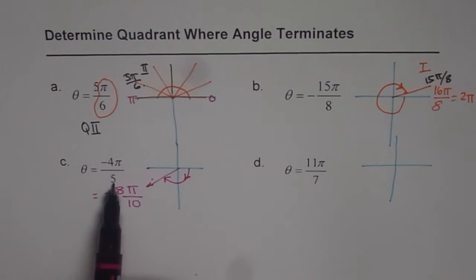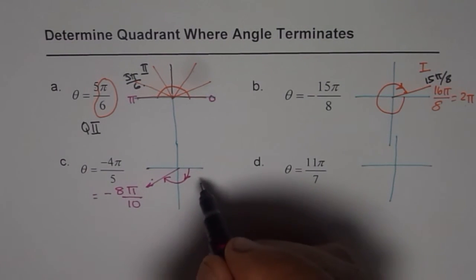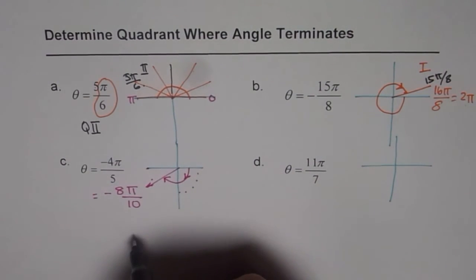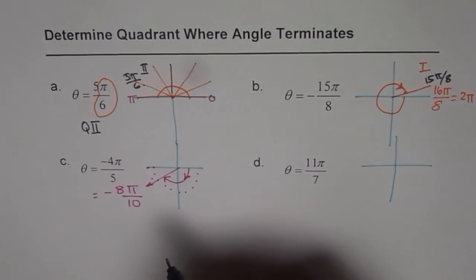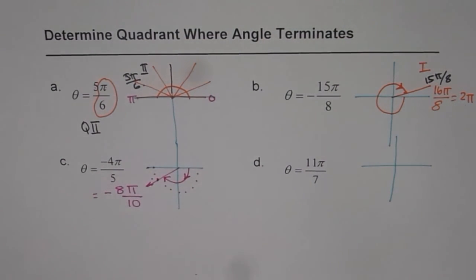If you have odd number, multiply both by 2 so that you get even number. So pi is divided into 10 portions. That means you have 5 in each quadrant, right? So 1, 2, 3, 4, 5, 6, 7, 8, 9, 10. Do you get the point? So this one is 8th. That is how you do it.